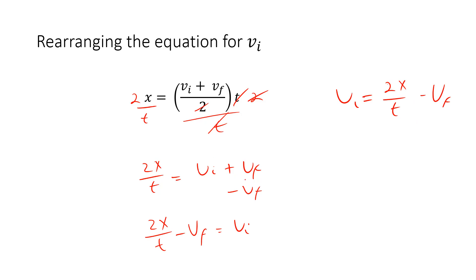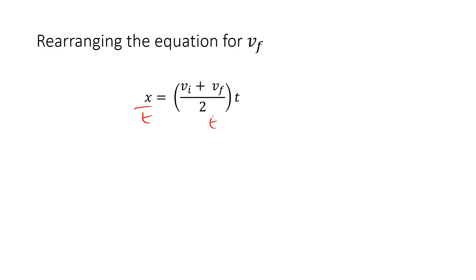If I was going to solve for vf, it would be very similar. I'd divide out the t, then multiply out the 2. And so 2x over t equals vi plus vf. That's the same place we were before.